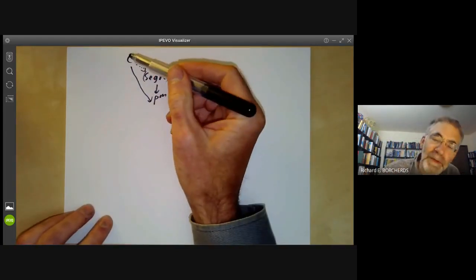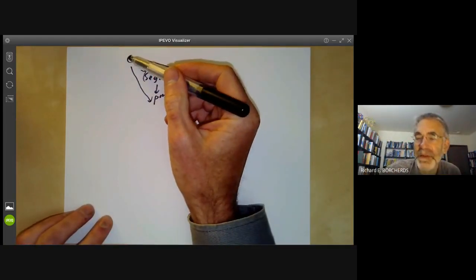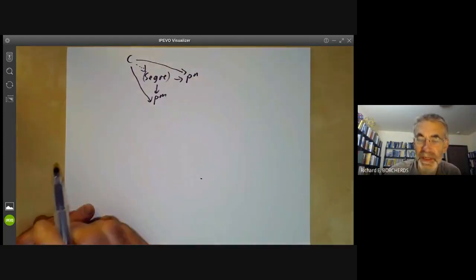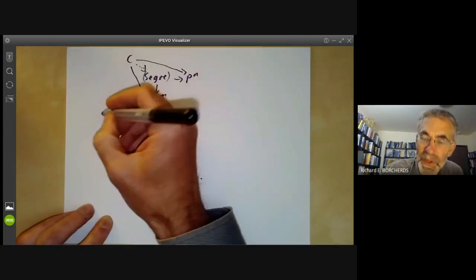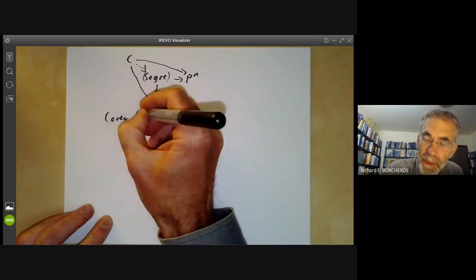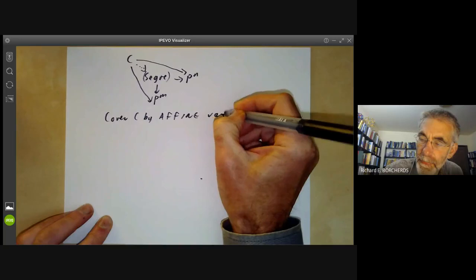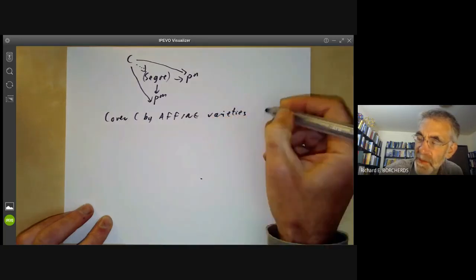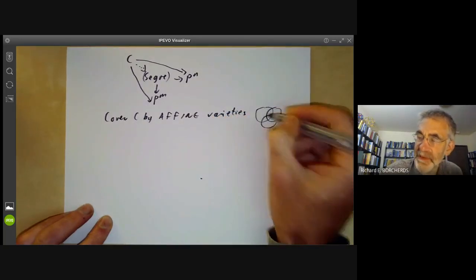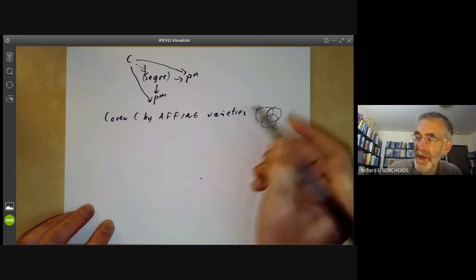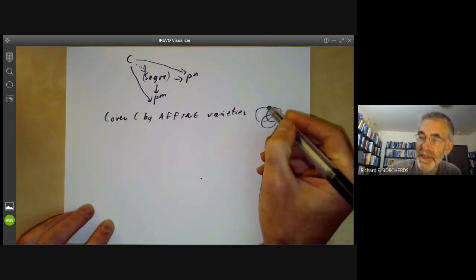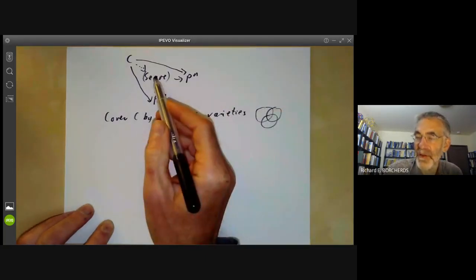Well, defining maps from arbitrary projective spaces to other projective spaces is a little bit tricky. So what we do is we cover C by affine varieties. So we can think of C as being covered by several affine varieties.